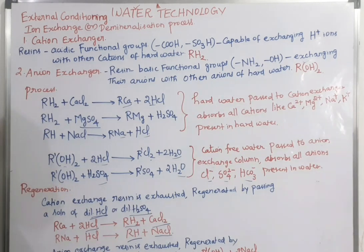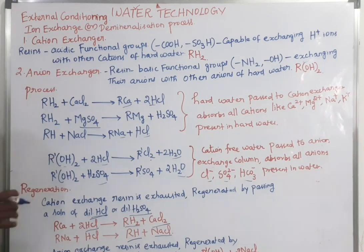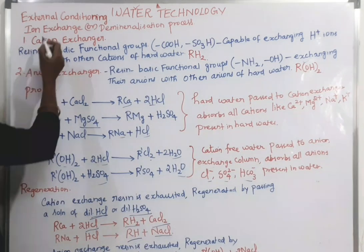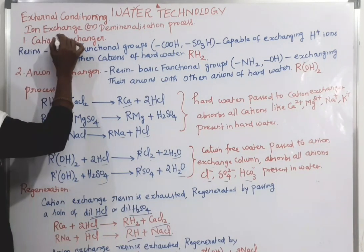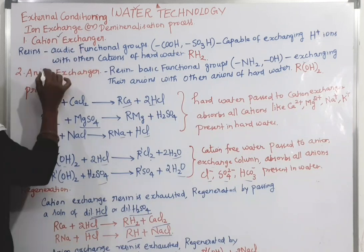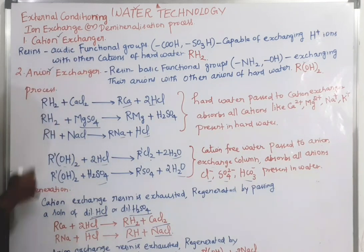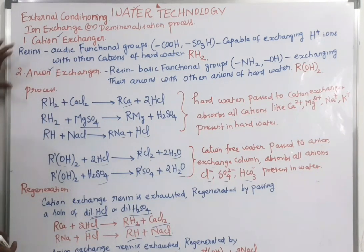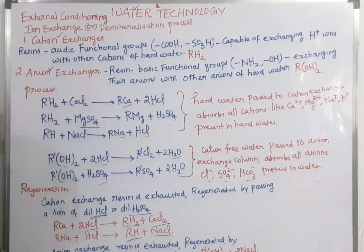So what is meant by ion exchange or demineralization process? In this process, almost all the ions — that is, anions and cations — are removed. The two exchangers used in this demineralization process are the cation exchanger and anion exchanger.